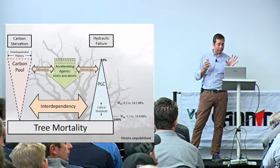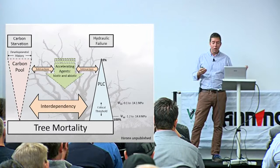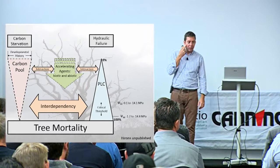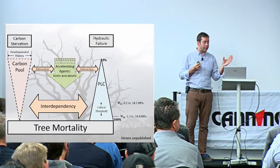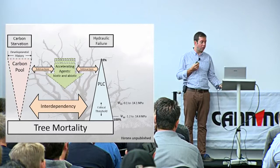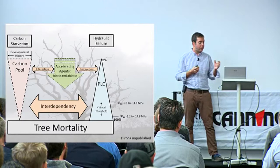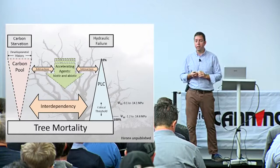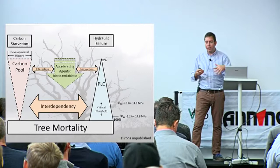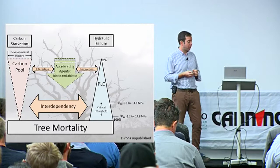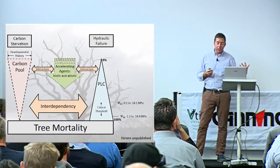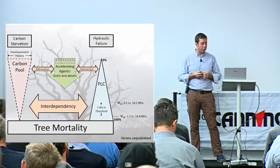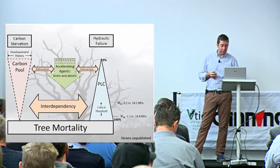Trees die either through total hydraulic failure or carbon starvation. In terms of percentage loss of conductivity, we know quite a lot about which species can withstand low water potentials within the soil and within their hydraulic system - within their xylem. We can collect data on at what point they get to 50% and 88% loss of hydraulic conductivity. Brendan Choate in Sydney has done excellent work analysing different species traits in relation to these critical thresholds.